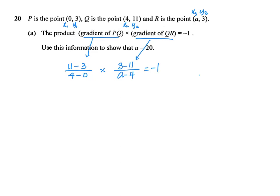And this equals negative 1. Now let us simplify this. What do we get? 11 minus 3 is 8, so 8 over 4 gives me 2, times 3 minus 11 will be negative 8 over (a minus 4). This equals negative 1.